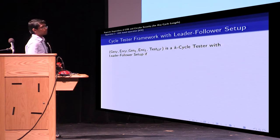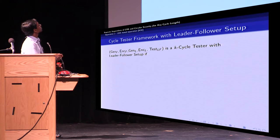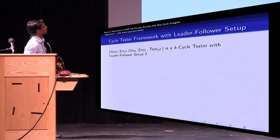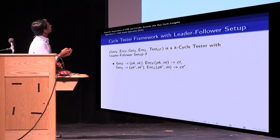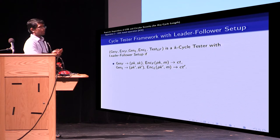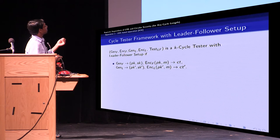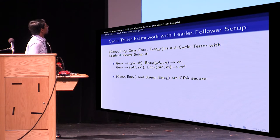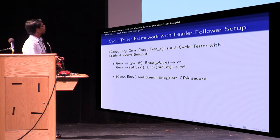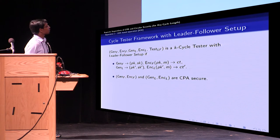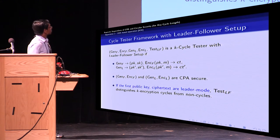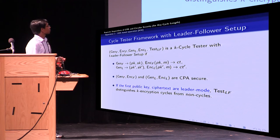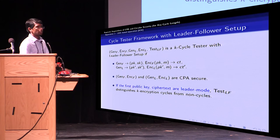So in this abstraction, we have five algorithms, two for the leader mode, two for the follower mode, and one for the tester algorithm. The keygen and the encryption algorithms work as expected. The keygen gives out public keys and secret keys, and the encryption gives out ciphertexts. And we require CPA security for both the leader mode and the follower mode. And the test algorithm must be able to distinguish between key cycles and encryption of non-cycles if the first public key and ciphertexts are in the leader mode.